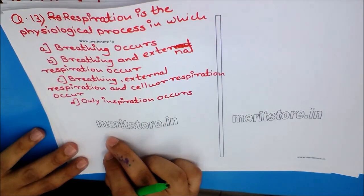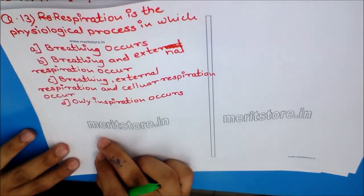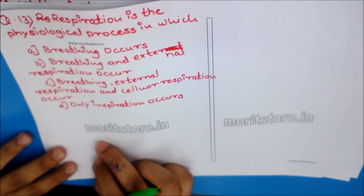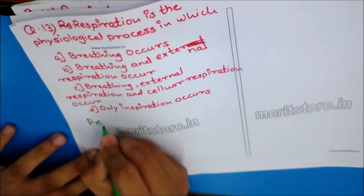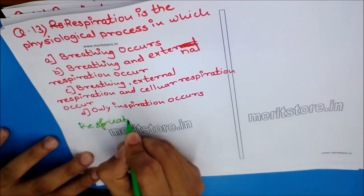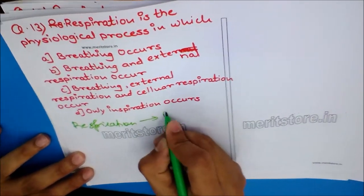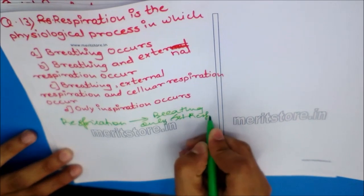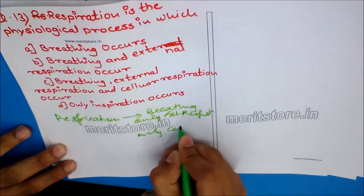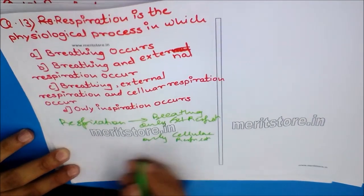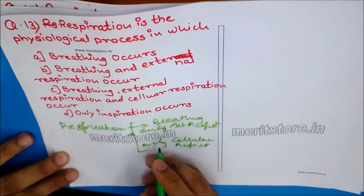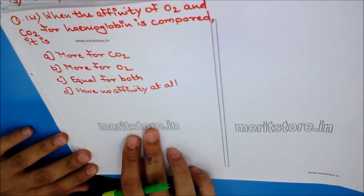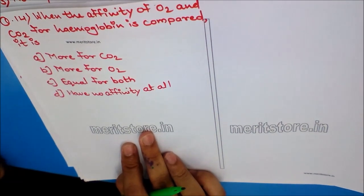Question 13: Respiration is a physiological process in which? Options: A) Breathing occurs, B) Breathing and external respiration occur, C) Breathing, external respiration, and cellular respiration occur, D) Only inspiration occurs. Respiration should not be mistaken as only breathing or only external respiration or only cellular respiration — it is a combination of all three. The answer is option C.